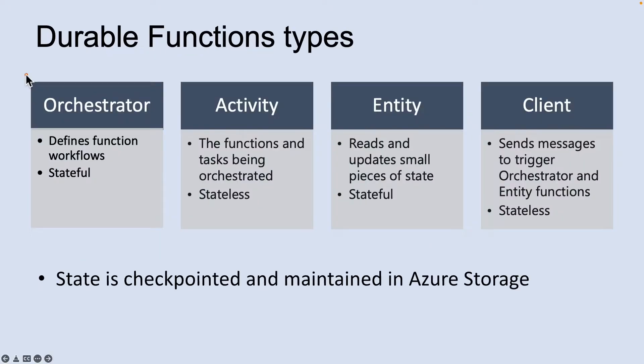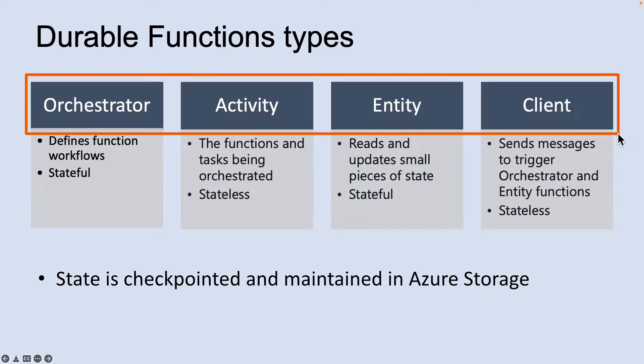Let us look into different types of Durable Functions. There are currently four Durable Functions types in Azure Functions: Orchestrator, Activity, Entity, and Clients.